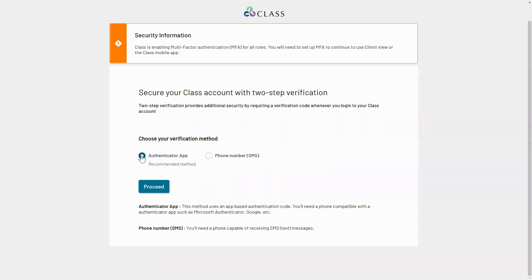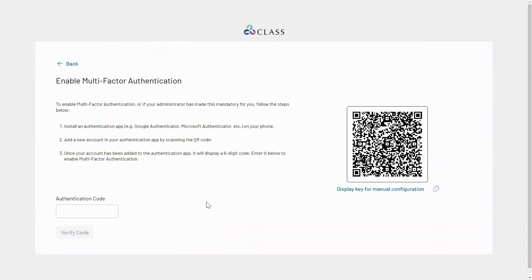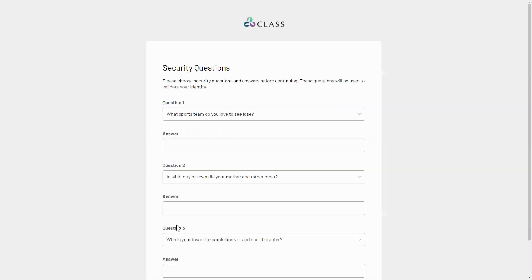If you select the Authenticator method and proceed, you will need to scan the QR code with one of your Authenticator apps like Google Authenticator or Microsoft Authenticator. Once you have scanned the QR code, enter the six-digit code that appears on the Authenticator app and click Verify Code to continue.